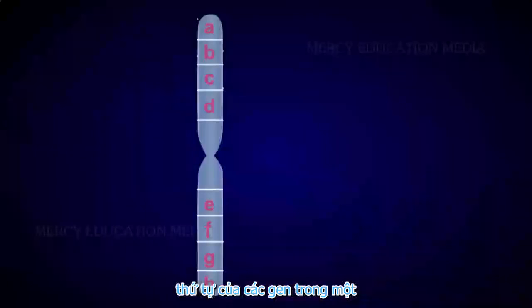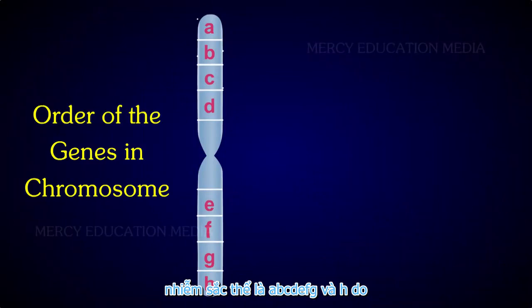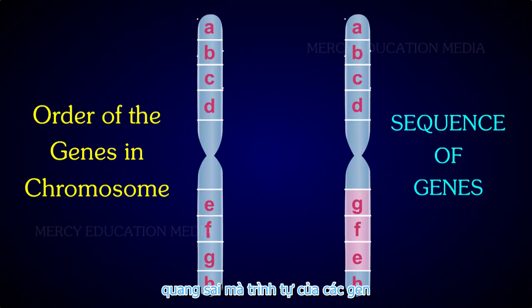For example, Drosophila and maize. The order of genes in a chromosome is A, B, C, D, E, F, G, and H. Due to aberration,